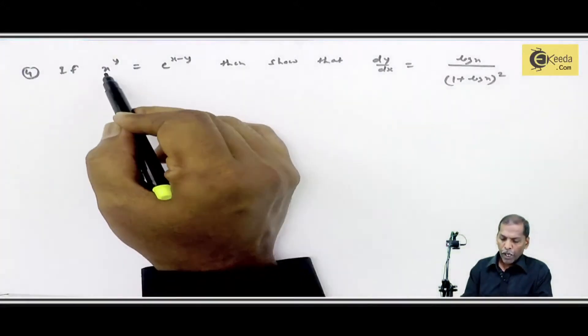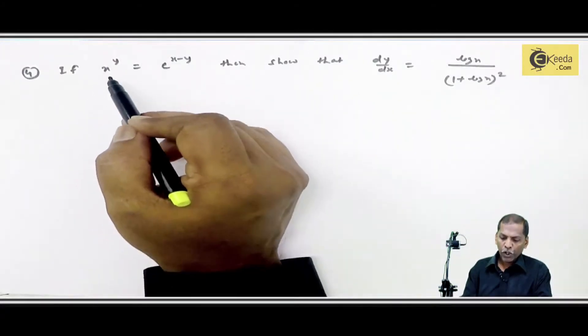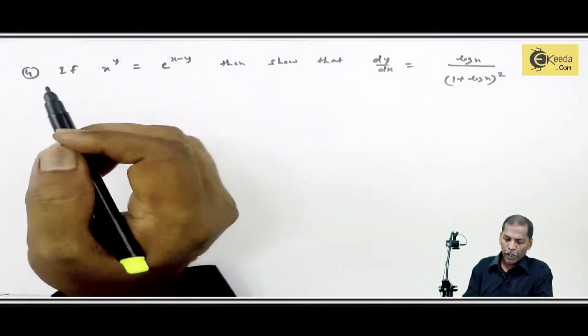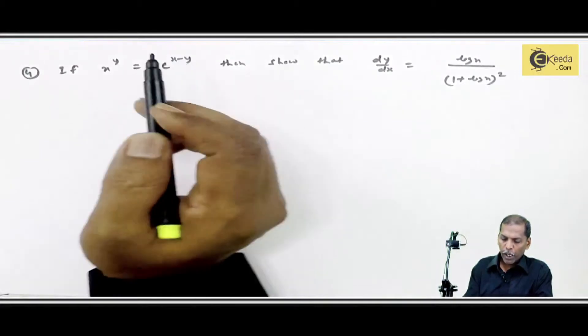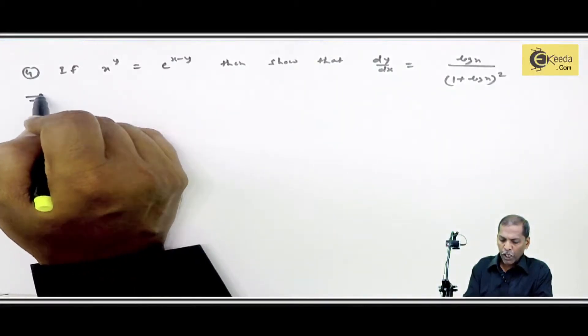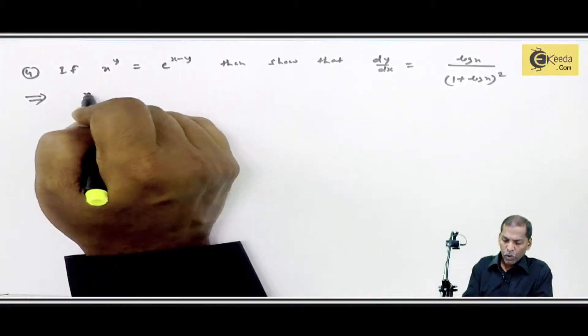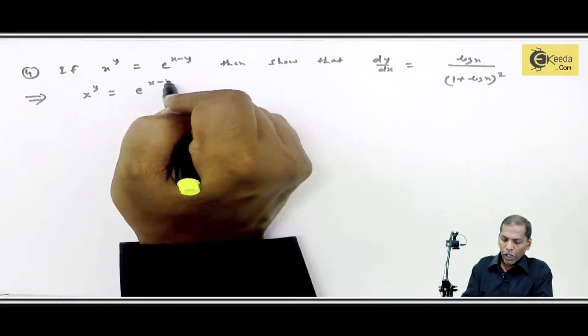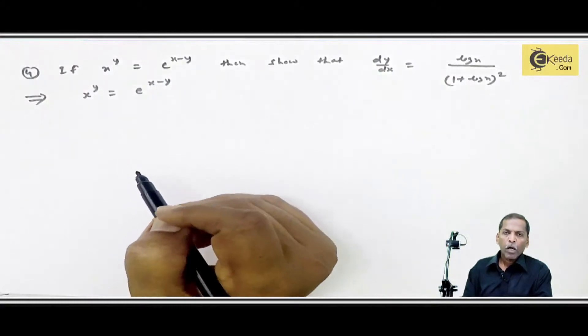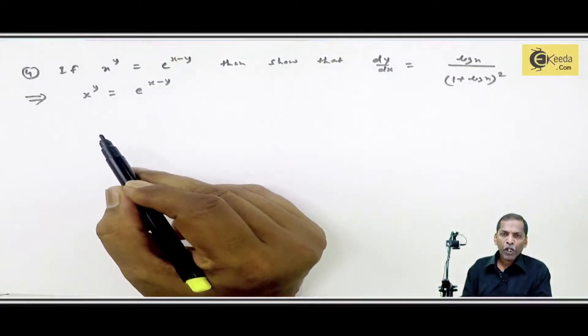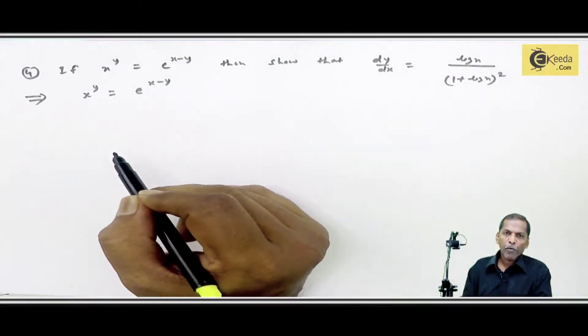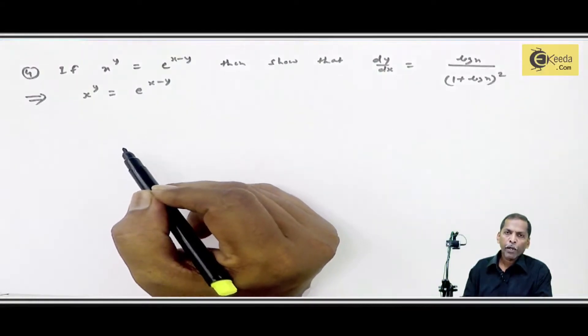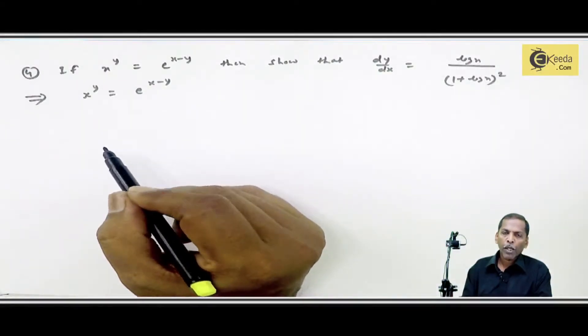Here we have x raise y, that is function raise function, given equal to e raise x minus y. We start with x raise y equals e raise x minus y. Now x raise y is function raise function, so here we have no formula to find derivative. This means that we need to simplify this.